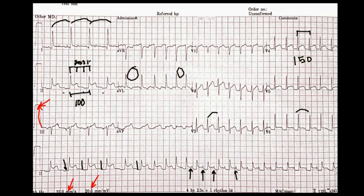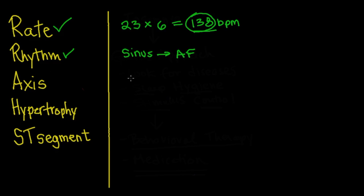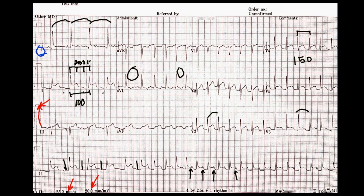Next is axis. One technique is looking at the limb leads and picking the one with the highest positive amplitude — in this case it's lead I. That's going to be the direction of the axis. Because lead I vector goes in this direction, that's generally the direction of the axis. Since AVF is going down, it should be the most isoelectric — and in fact, AVF shows the least amplitude. So the axis is most in line with lead I and perpendicular to lead AVF.